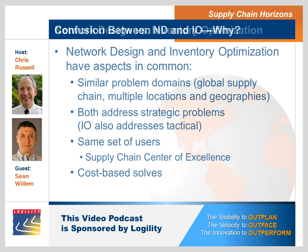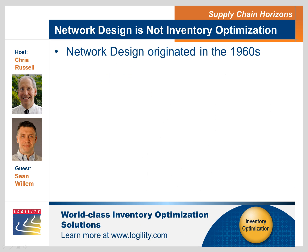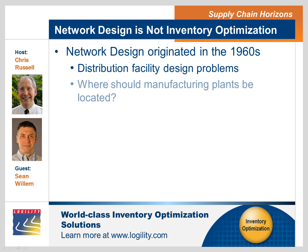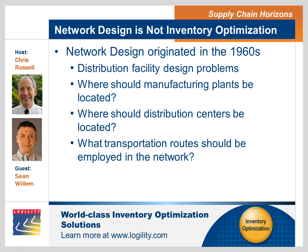When I was working with network design back in the 1990s, the problems we were solving were very distribution-intensive — where do we put the warehouses, what are the modes of transportation? These modeling solutions have different origins. Network design really originated in the 1960s to solve distribution facility design problems — looking at where manufacturing plants and distribution centers should be located, and what transportation routes should be employed to marry up manufacturing plants with distribution centers and customer demand locations.